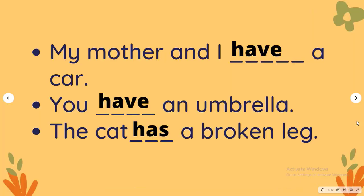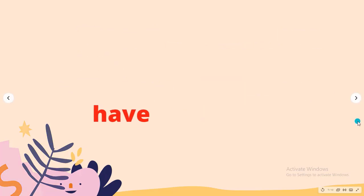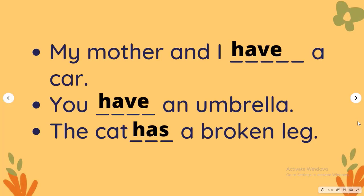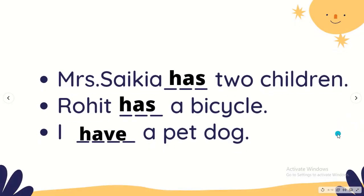In all these sentences, there is no other verb — only has and have. Has and have carry the meaning of possession or belongs to. Has and have have worked as main verbs in these sentences. I hope you have understood how has and have are used as main verbs. Remember: has and have are used in present tense only.